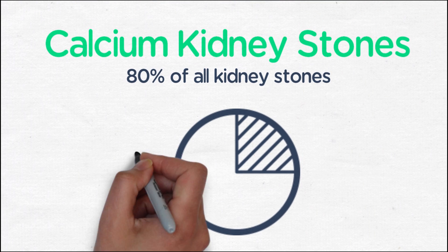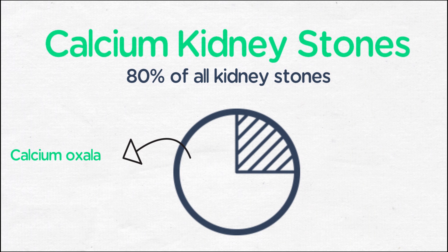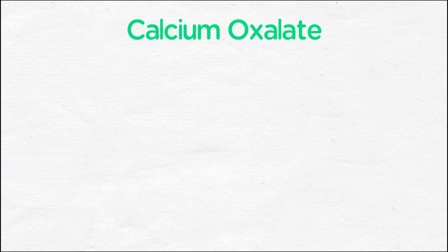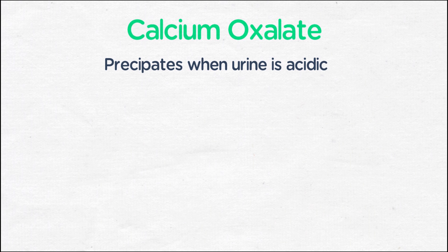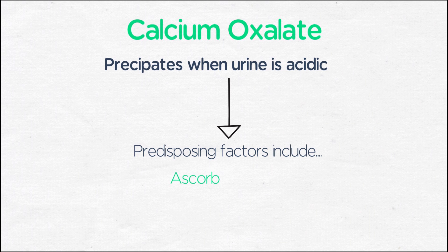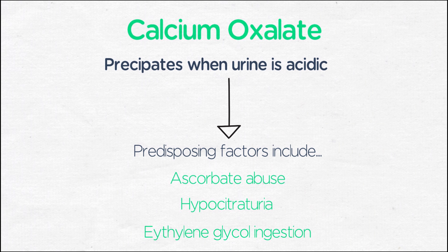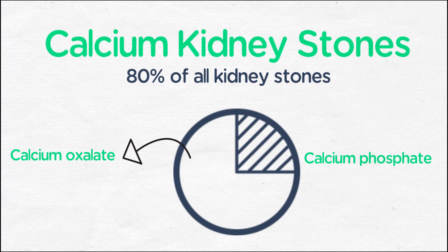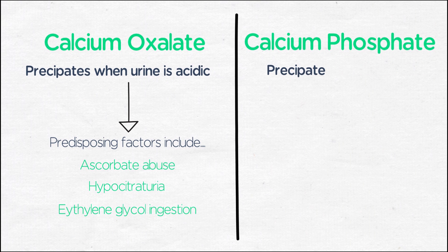Within calcium-based stones, calcium oxalate is the most common cause of stones and it precipitates in the urine when the urine is acidic. Therefore, there are some important predisposing factors including ascorbate or vitamin C abuse, hypocitraturia, and ethylene glycol ingestion or poisoning. Calcium phosphate stones make up the minority of calcium-based renal stones and they precipitate in a basic urine, in contrast to calcium oxalate stones.